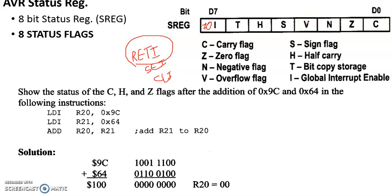The V flag is the overflow flag, relevant when operating on negative numbers represented in two's complement. The sign bit always contains the exclusive OR of the overflow flag and the negative flag. Half carry refers to the auxiliary carry.